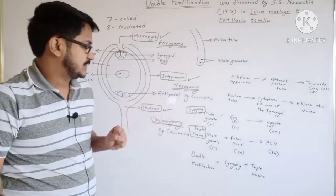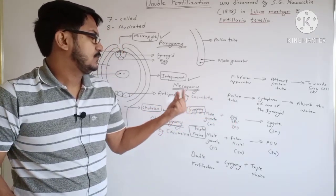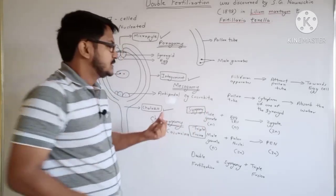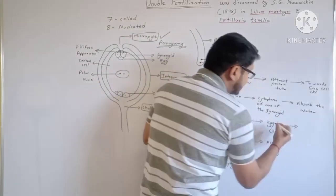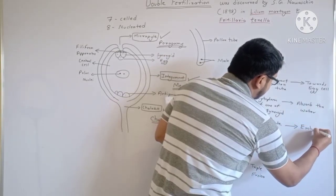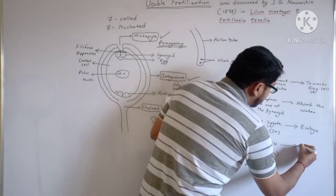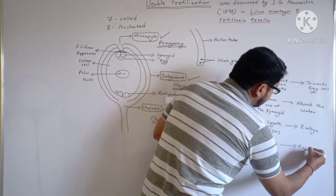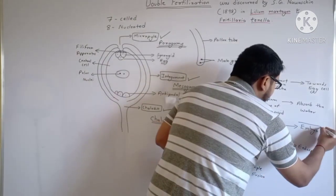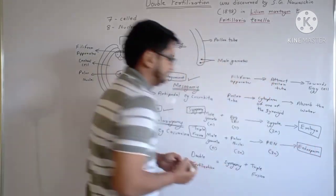Now, what are the products? After fertilization, the zygote will get converted into the embryo, and the primary endosperm nucleus will form the endosperm. So we get the embryo and endosperm.